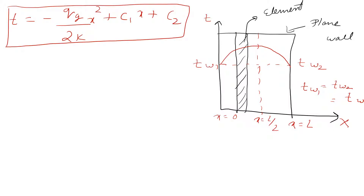Now, T_w1 is the wall temperature at one side and T_w2 is the temperature at the outside wall surface. Applying boundary conditions, we observe that at x = L/2 the temperature becomes maximum.